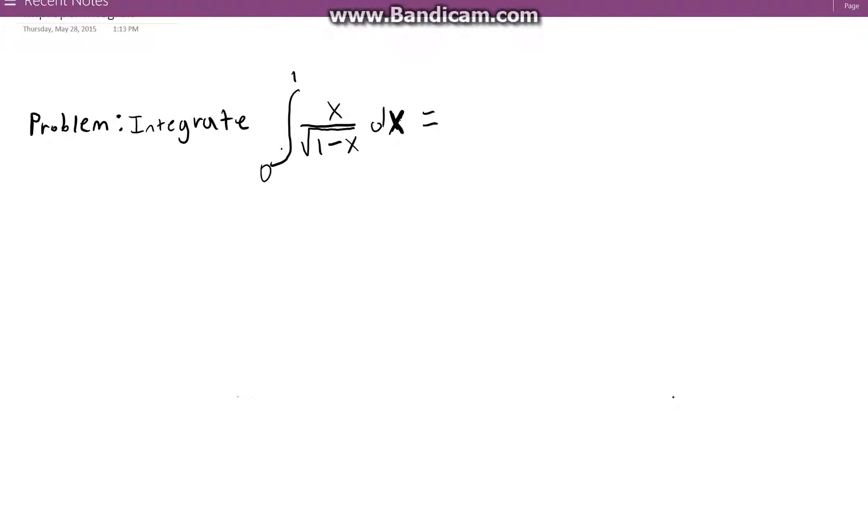In this video, we will look at how to solve an improper integral. As we can see, x cannot be equal to 1 because when x is equal to 1, the denominator will be equal to 0, which cannot happen.